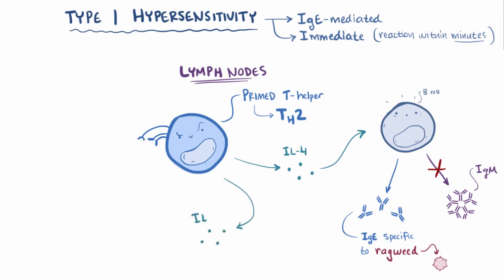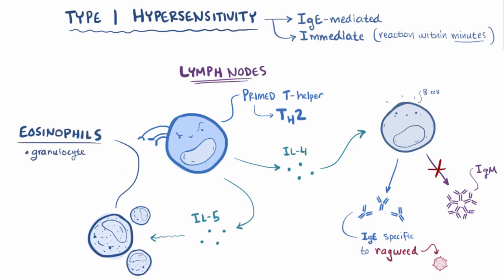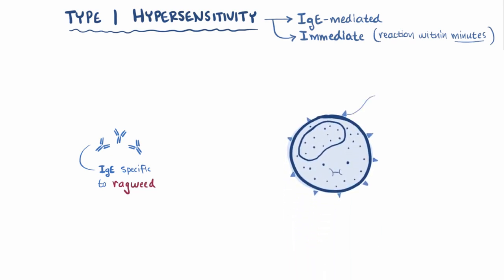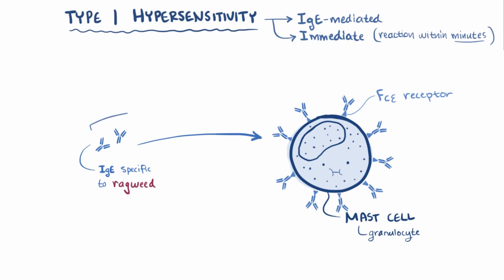TH2 cells also release some interleukin 5, which stimulates production and activation of eosinophils, a granulocyte which is a type of white blood cell that degranulates, or essentially releases a whole bunch of toxic substances that can damage both invading cells and nearby host cells. These ragweed specific IgE antibodies have a high affinity for FC epsilon receptors on mast cells, another type of granulocyte, so they quickly attach themselves to the surface of the mast cells. These antibodies are also called cytotropic antibodies, since they can bind to cell surfaces. At this point it's like the mast cell's been geared up for combat, and is ready for action, and therefore we're finished with the sensitization phase.